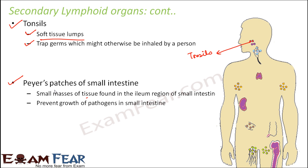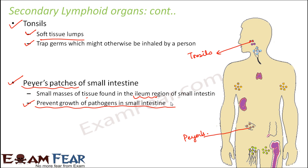The last secondary lymphoid organ is Peyer's patches of the small intestine — small masses of tissue present in the ileum region of the small intestine. They prevent the growth of pathogens in the small intestine. All secondary lymphoid organs trap germs, pathogens, or antigens and provide a platform for lymphocytes to interact with and destroy those antigens. This is how the human immune system and its different organs function.